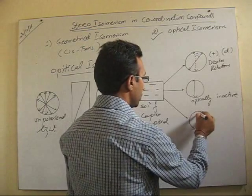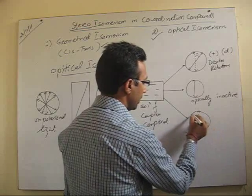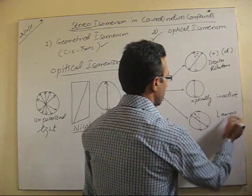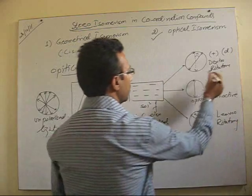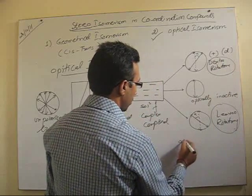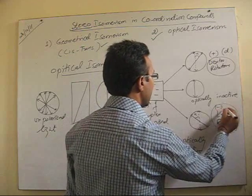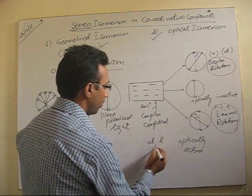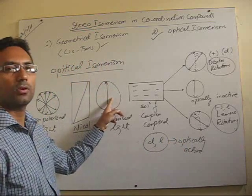In the third case, if the plane is rotated towards the left side by an angle alpha, then the substances are called levorotatory, represented by a negative sign or small 'l'. Both dextrorotatory and levorotatory forms are optically active. So your d-form and l-form are both optically active. Optical activity is the behavior of a substance towards plane polarized light, and we will discuss its examples in different geometrical isomers.